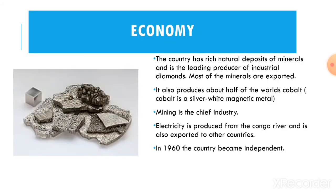Economy: The country has rich natural deposits of minerals and is the leading producer of industrial diamonds. Most of the minerals are exported. It also produces half of the world's cobalt. Cobalt is a silver-white magnetic metal. Mining is the chief industry, and electricity is produced from the Congo River and is also exported to other countries. In 1960, the country became independent.